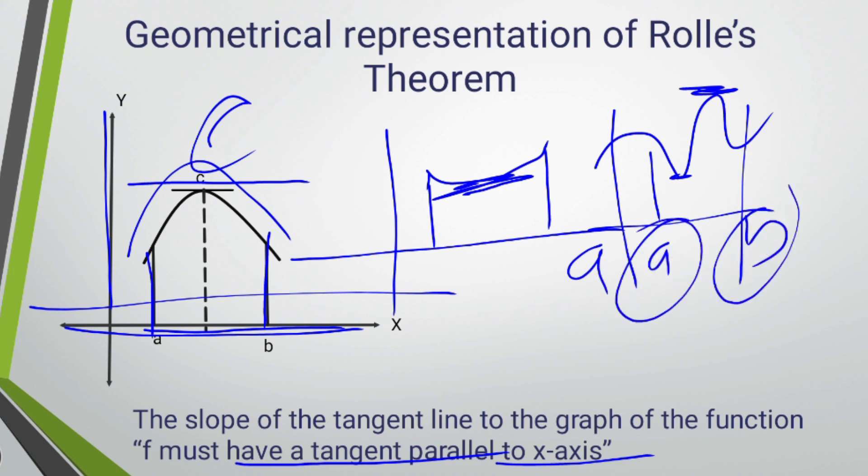The term derivative means - derivative is used to find the slope of the tangent line of the graph of that function. Your derivative is nothing but the slope of the tangent line.